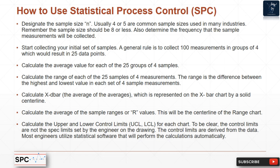Next, calculate the average value for each of the 25 groups of four samples. Calculate the range of each of the 25 samples — the range being the difference between the highest and lowest value in each set of four measurements. Then calculate X-bar-bar (the average of the averages), which is represented on the X-bar chart by a solid center line. Calculate the average of the sample ranges (R-bar), which will be the center line of the range chart. Finally, calculate the upper and lower control limits (UCL and LCL) for each chart.